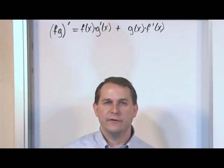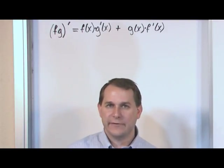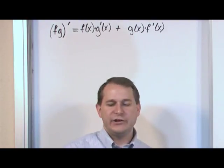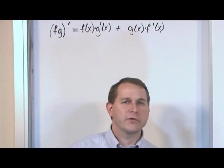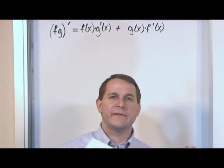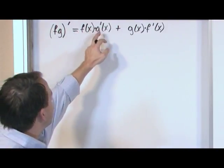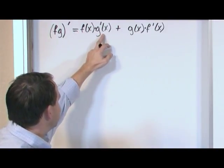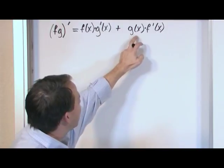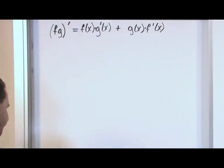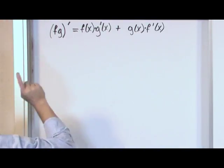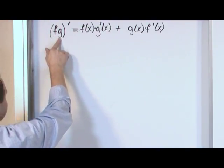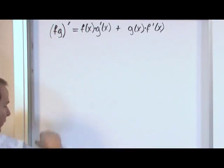Think about functions like x squared times the natural log of x — those are two functions multiplied together — or x cubed times (x squared plus five). Any time you have two functions of x multiplied together, you take the first function multiplied by the derivative of the second, plus the second function times the derivative of the first. Your book may have it in a slightly different order, but it's the same thing: first times the derivative of the second, plus the second times the derivative of the first.